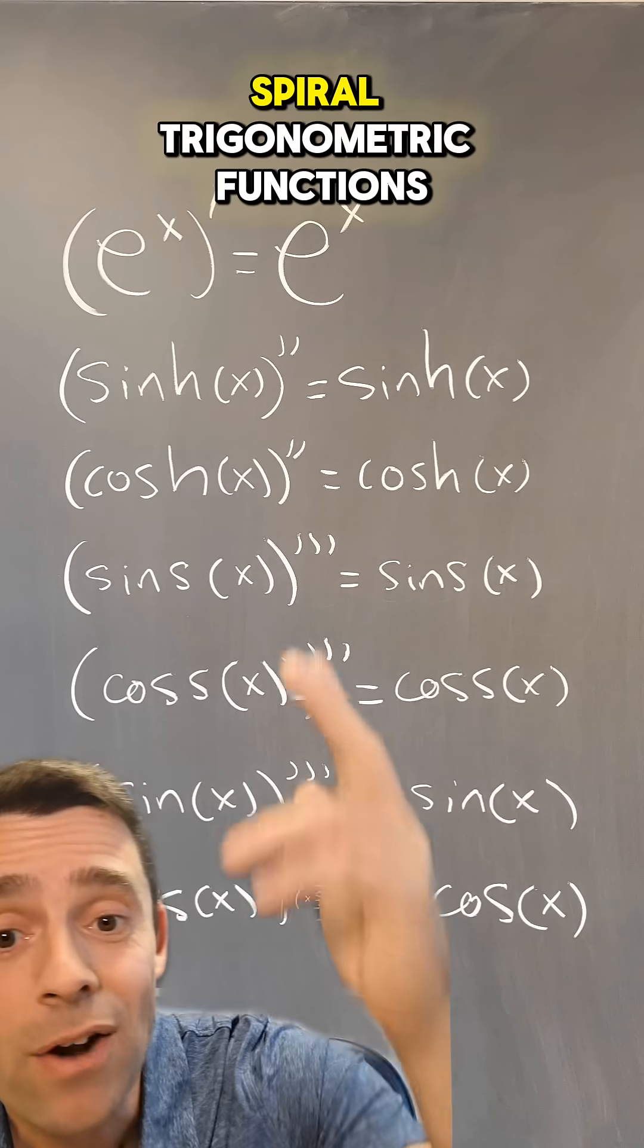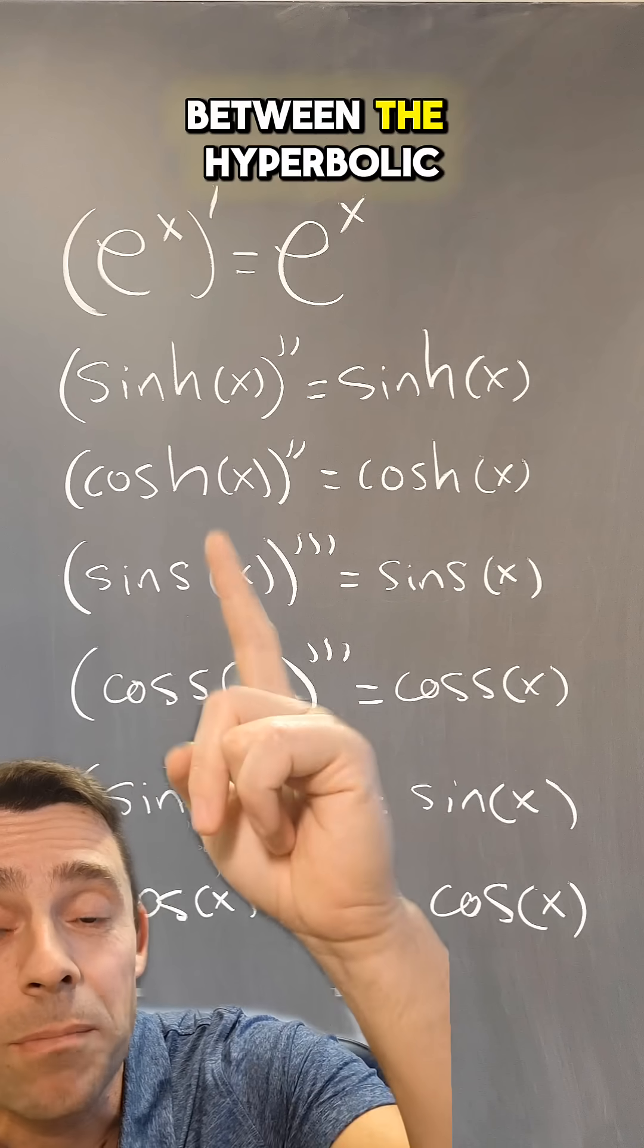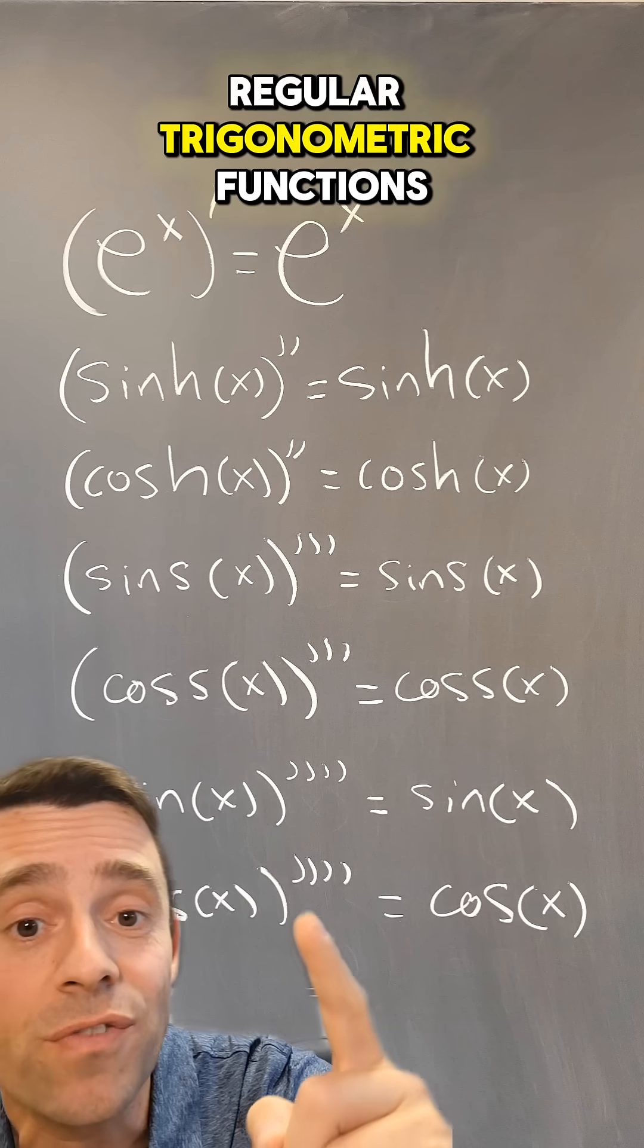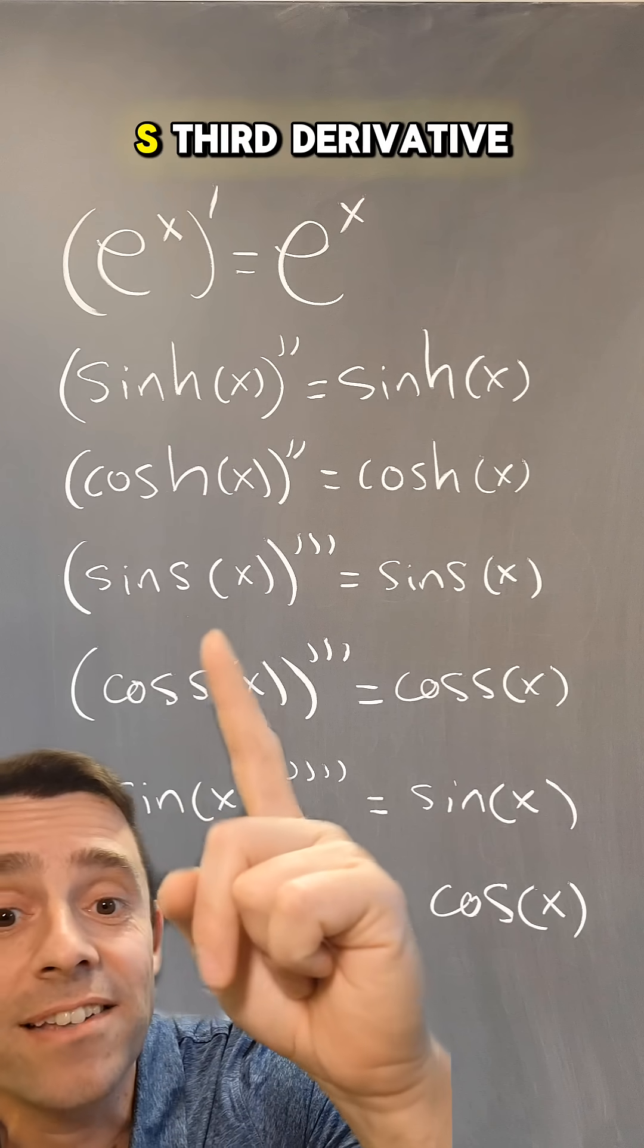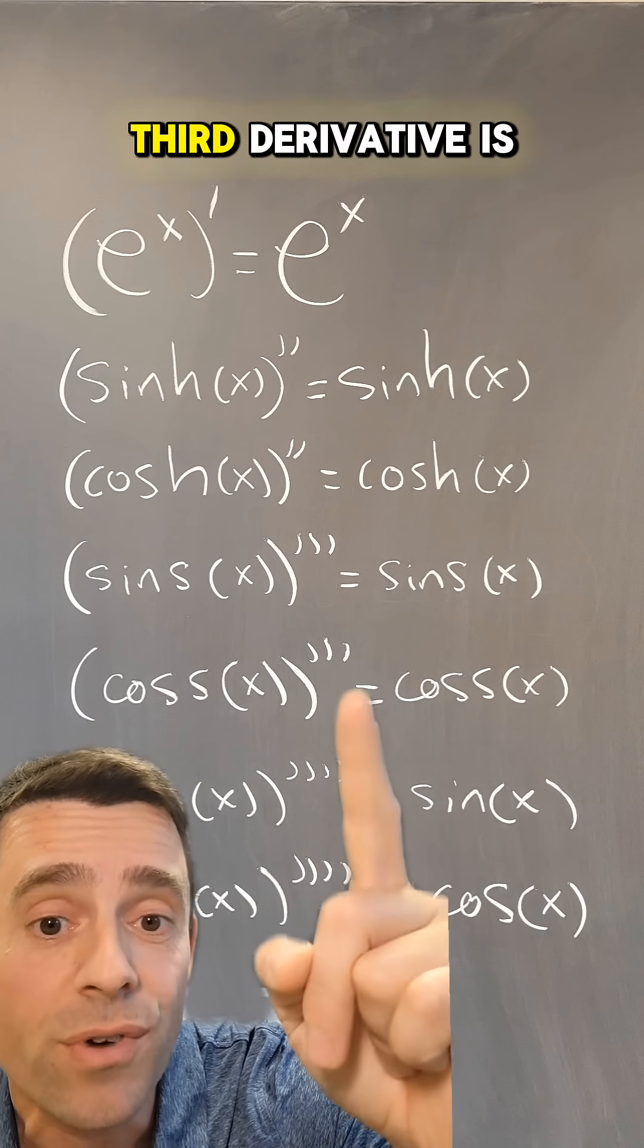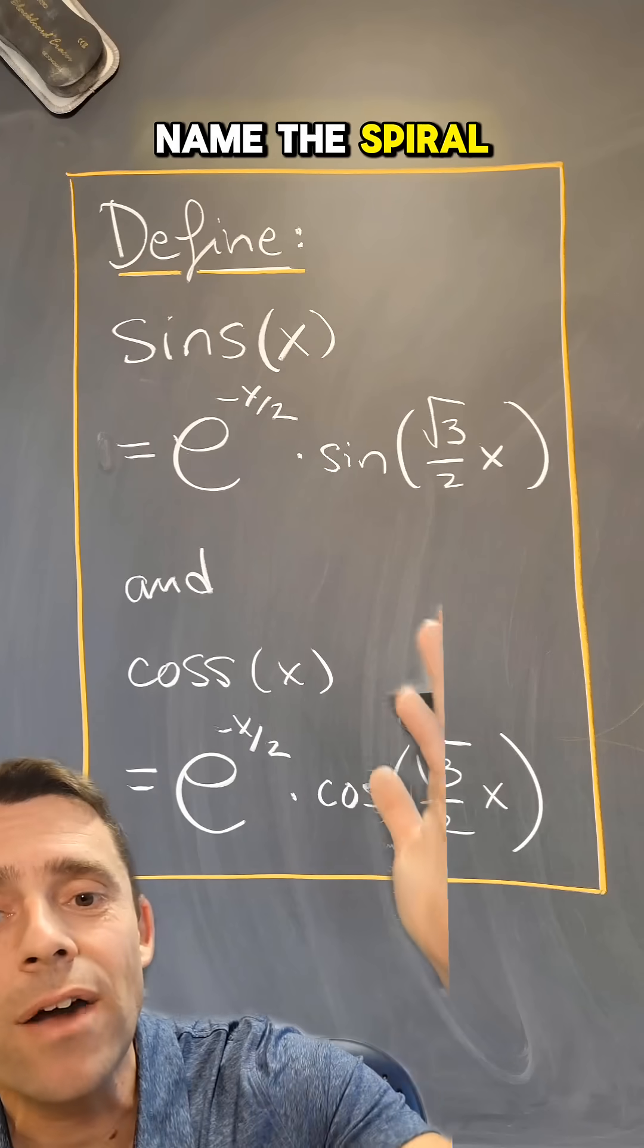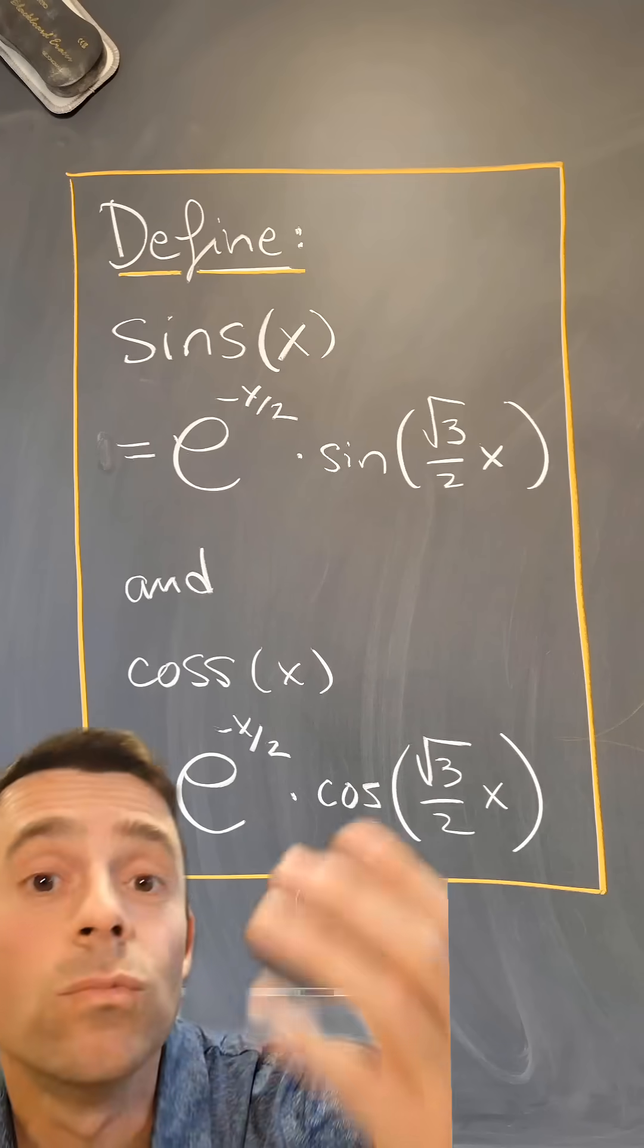And now this is how the spiral trigonometric functions fit in this family of functions between the hyperbolic ones and the regular trigonometric functions, such that sine s third derivative is equal to sine s, as cosine s third derivative is equal to cosine s. So that's their name, the spiral trigonometric functions. What do you think?